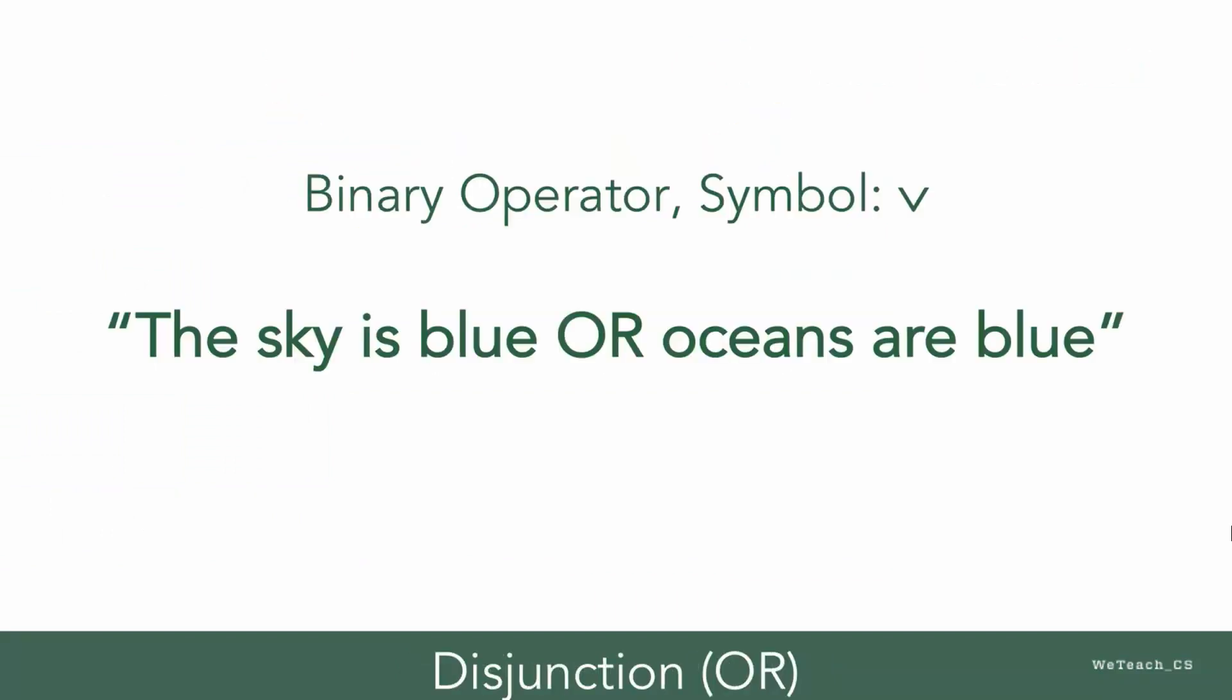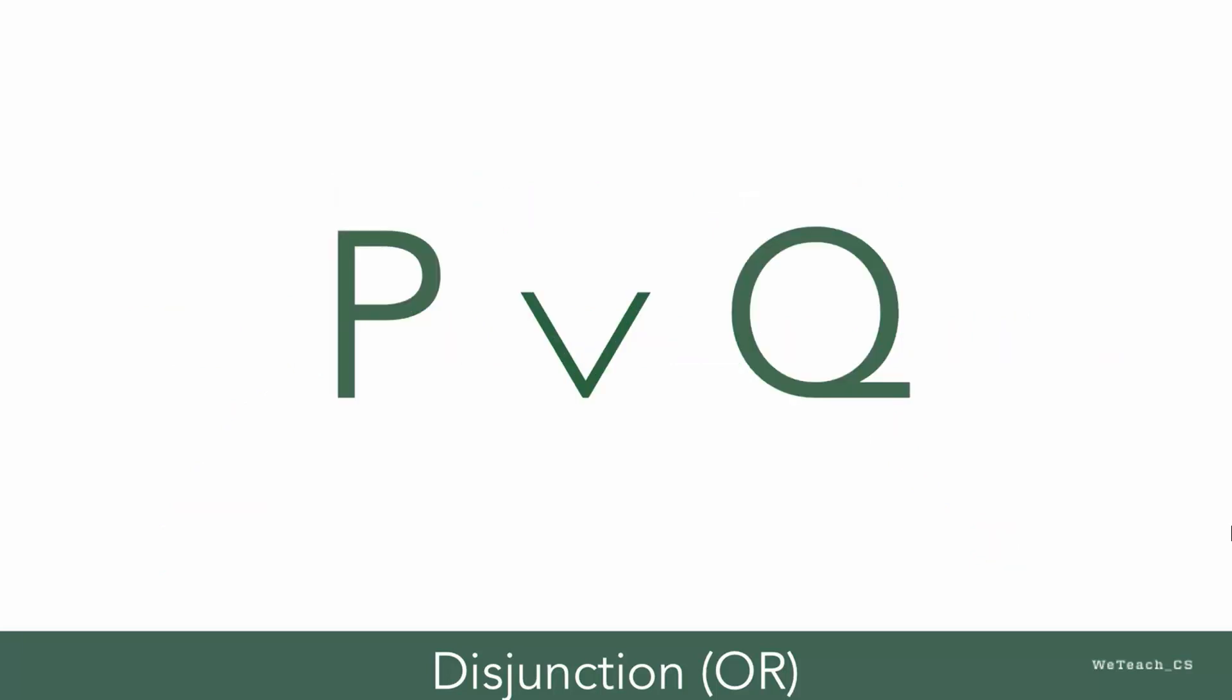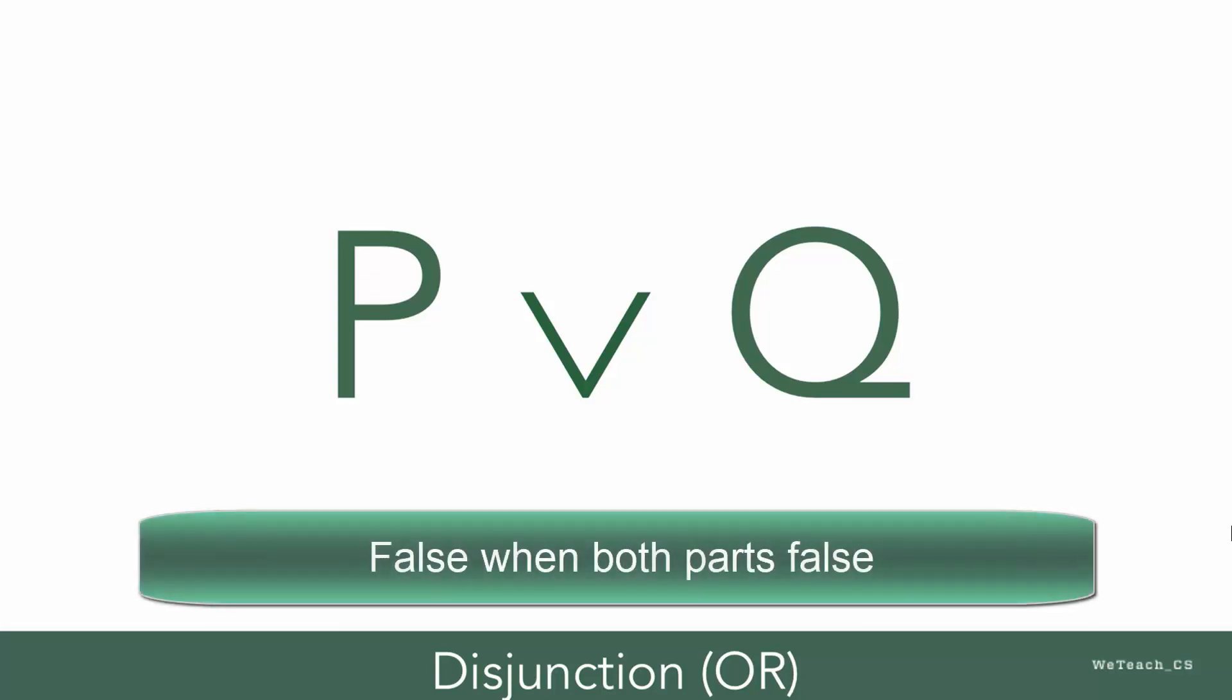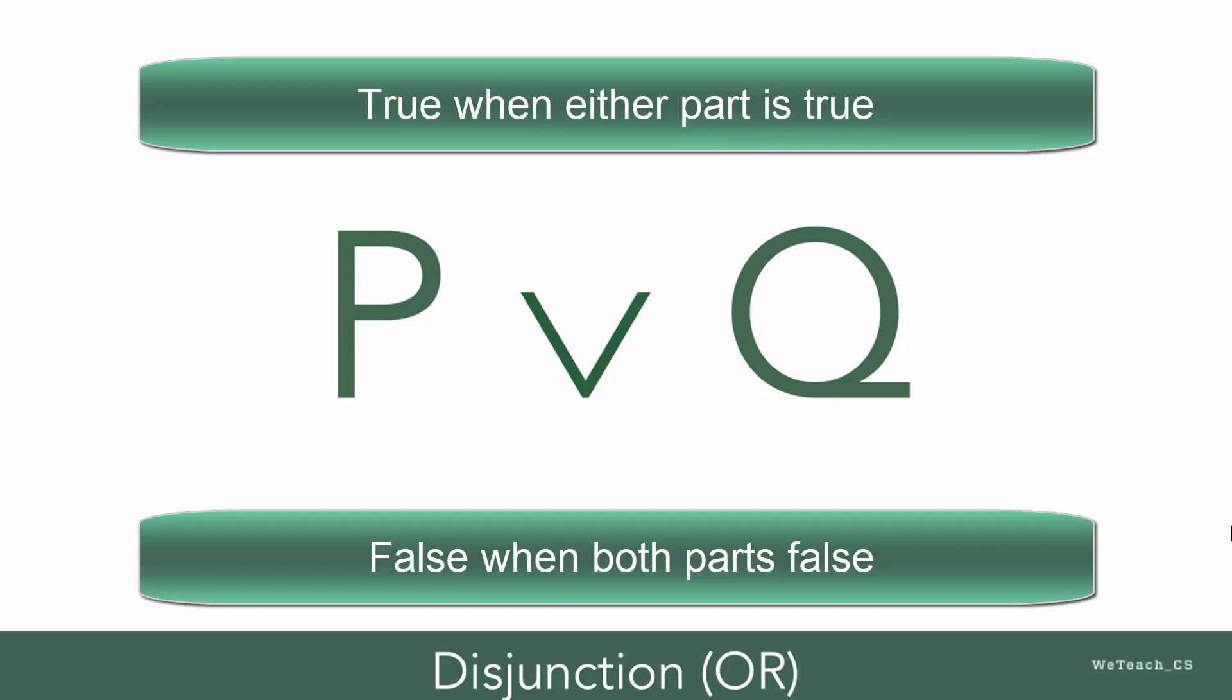Now that we've worked through a conjunction example, let us move on to a disjunction example. This statement is called the disjunction of P or Q. Here, we join two propositions with the word OR. P disjunction Q is false when both the variables are false and true when either of the variables is true.